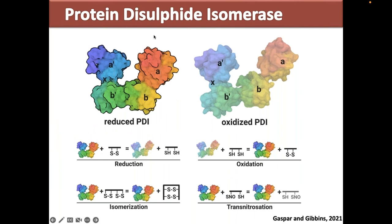PDI is an endoplasmic reticulum resident protein and basically shuffles electrons around — it can reduce disulfide bonds into free thiols, oxidize free thiols into disulfide bonds, and isomerize disulfide bonds to help fold proteins as well as activate things like integrins. On the outside of the cell, PDI has been implicated in several pathologies, and I have specifically been interested in how PDI regulates thrombus formation.